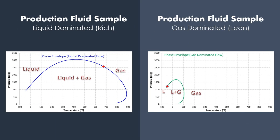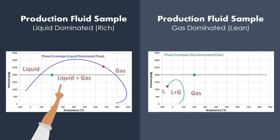The blue colored phase envelope corresponds to liquid dominated flow or rich gas flow, and the green colored phase envelope corresponds to gas dominated flow or lean gas flow. The key observation is that if you're operating at 2000 PSIG and 200°F, depending on which fluid you have in the system — if you are producing the liquid dominated flow composition — you will have liquid and gas together, meaning multi-phase flow.